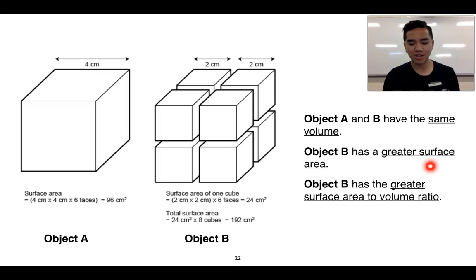So we can say that object B has a greater surface area. So when we write this as a ratio, we can say that object B has a greater surface area to volume ratio. Another way of saying that is that object B, the individual cubes.